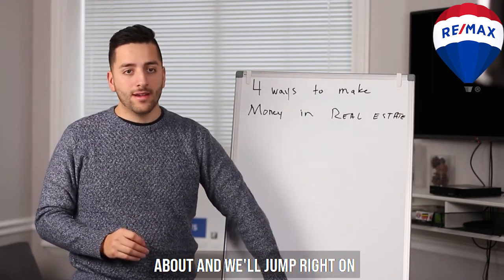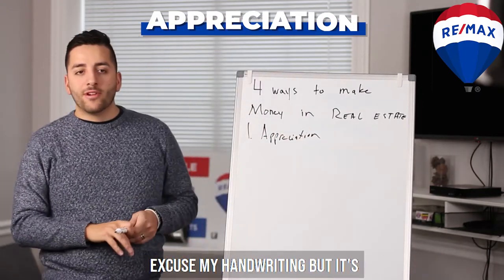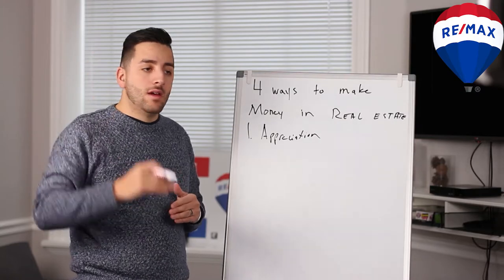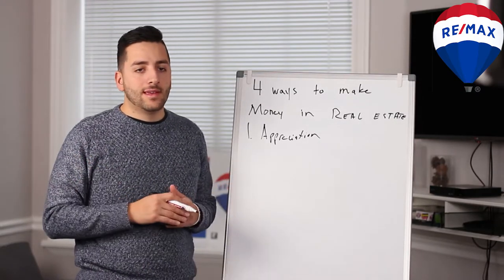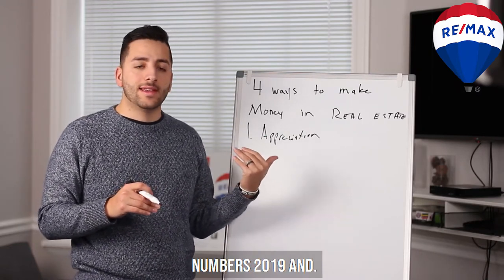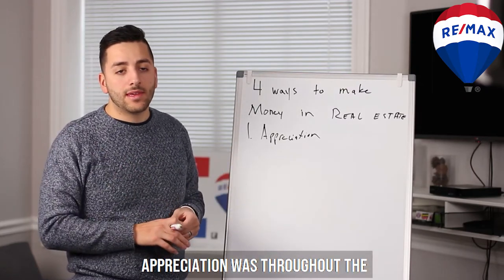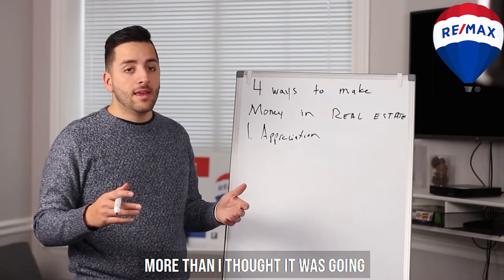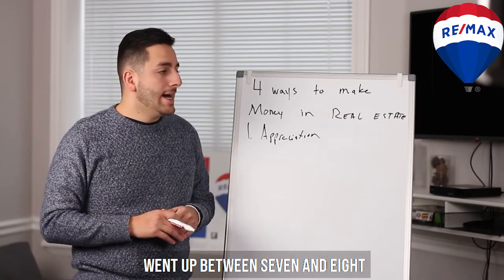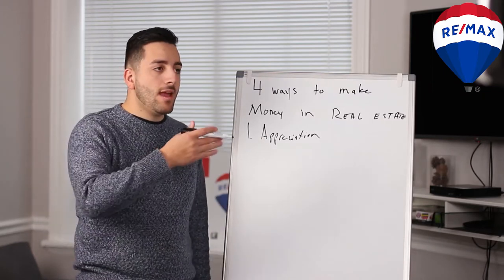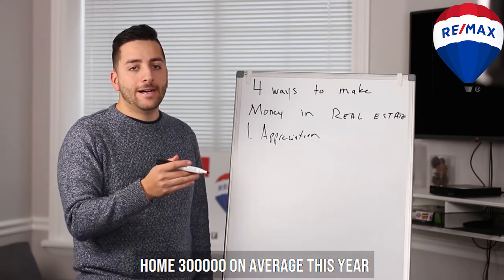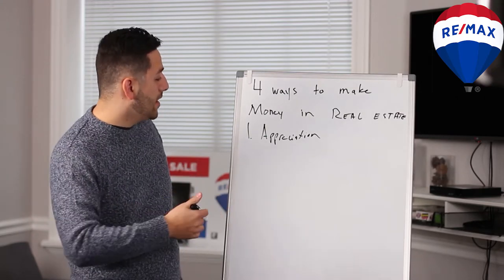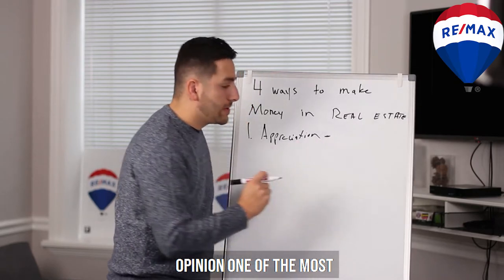Number one is appreciation. Appreciation is essentially how much the value is going up. Say I buy a house for $300,000 — using last year's numbers from 2019, based on MLS stats, the average appreciation was about seven percent. So a home bought in December 2018 for $300,000 would be worth about $320,000 to $325,000 by the end of 2019.